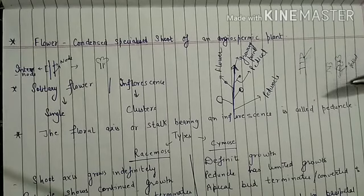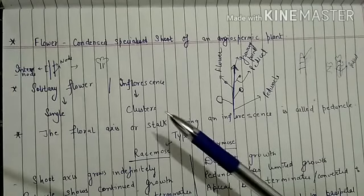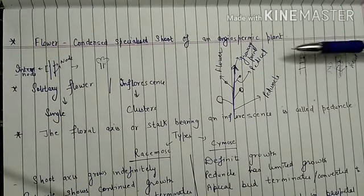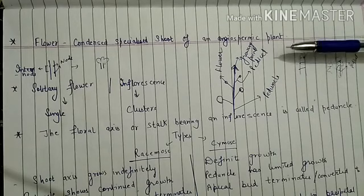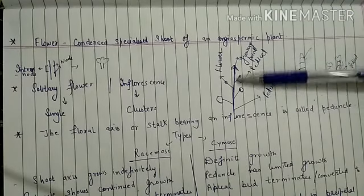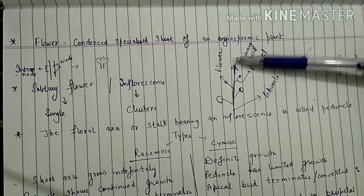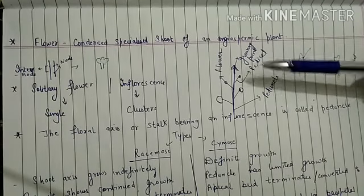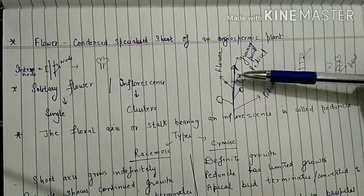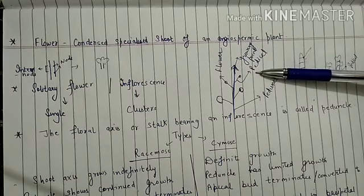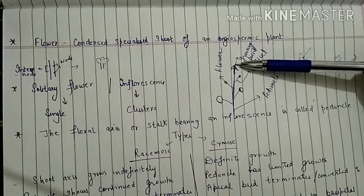Inflorescence means a cluster of flowers. Flower is a modified shoot of an angiosperm. The main stem or main axis which bears a cluster of flowers is known as peduncle. This is the main stem bearing a number of flowers, and this is the growing point.